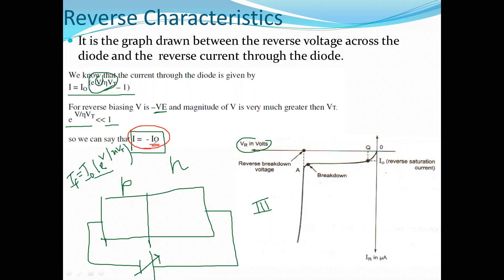In the forward bias condition, the current was exponentially related to the input voltage — e raised to the power V over eta Vt. But in the reverse bias condition, the current equals minus I0, which is constant. The current flow in reverse bias is constant for a particular temperature.